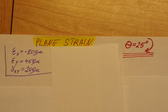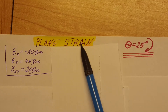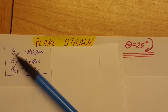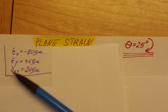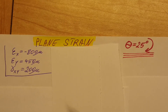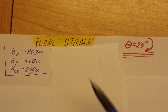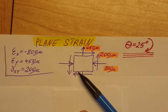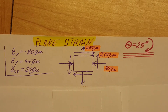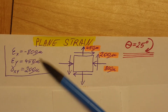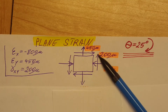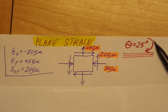This is a strength of materials problem where we are working with plane strain. We are given normal strain in X and Y, and shearing strain XY which is 200 microns. From these three we can go ahead and create our state of stress. We will rotate this state of stress 25 degrees clockwise.